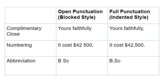I also added numbering — this is important. For the block style, when doing numbering, whether within the document or in a table, it costs $42,500 and we put a space. For the indented style, we put a comma. Finally, for abbreviations — BSc in the block style has no stops, while in the indented style it would be B.Sc. That is the difference between the two: full punctuation versus open punctuation.